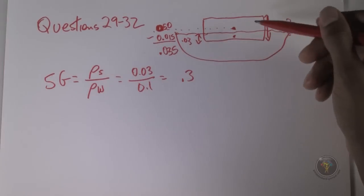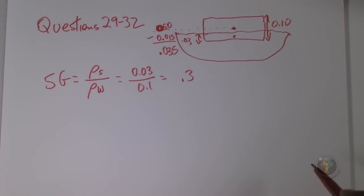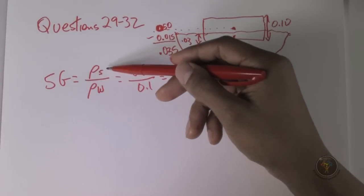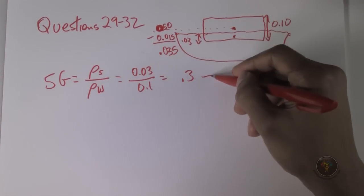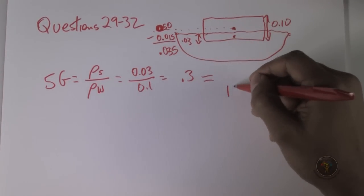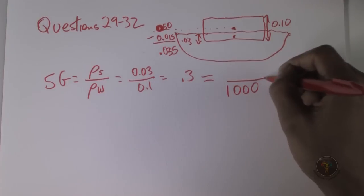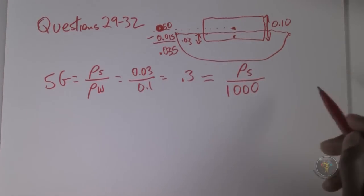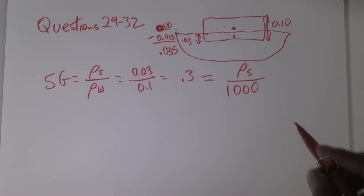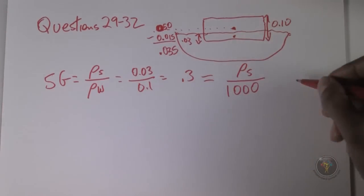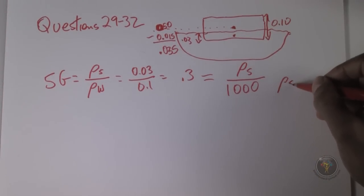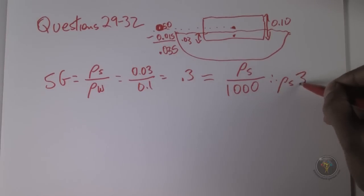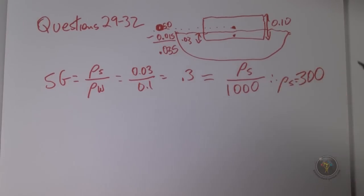So 30% is below the surface of the water. That ratio — 0.3 — is the density of the substance divided by the density of water, which is 1,000 kg/m³. Multiplying both sides by 1,000, the density of the wood is 300 kilograms per meter cubed.